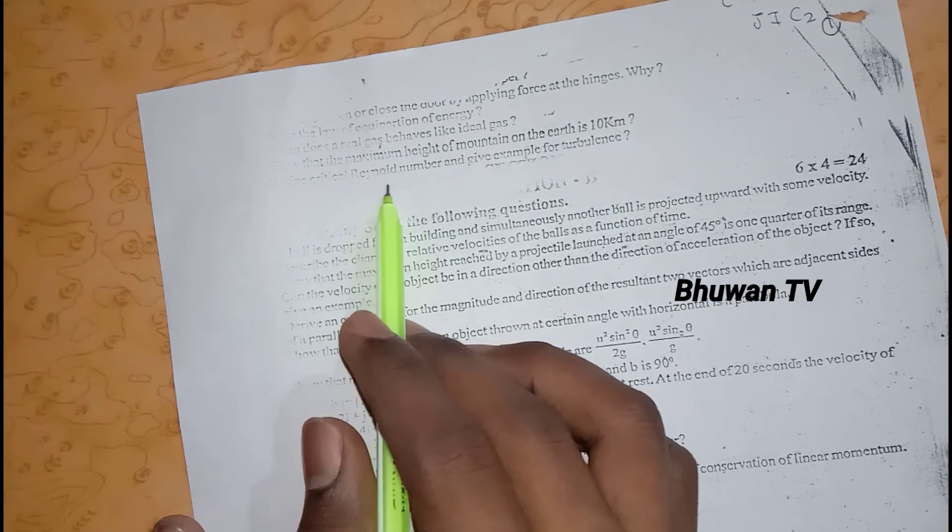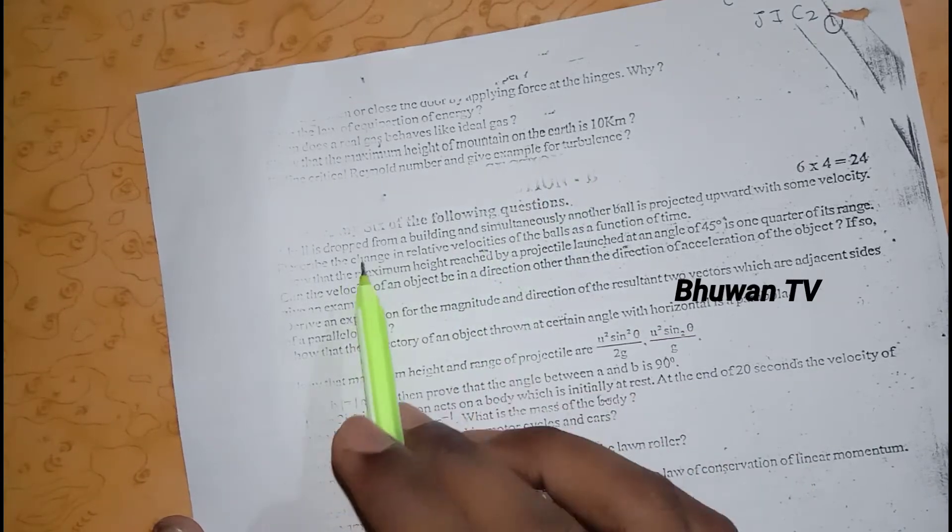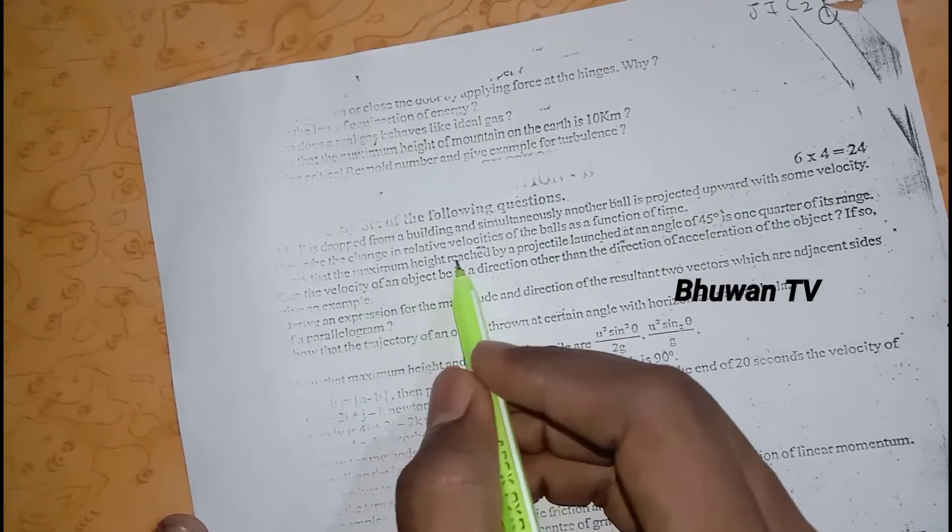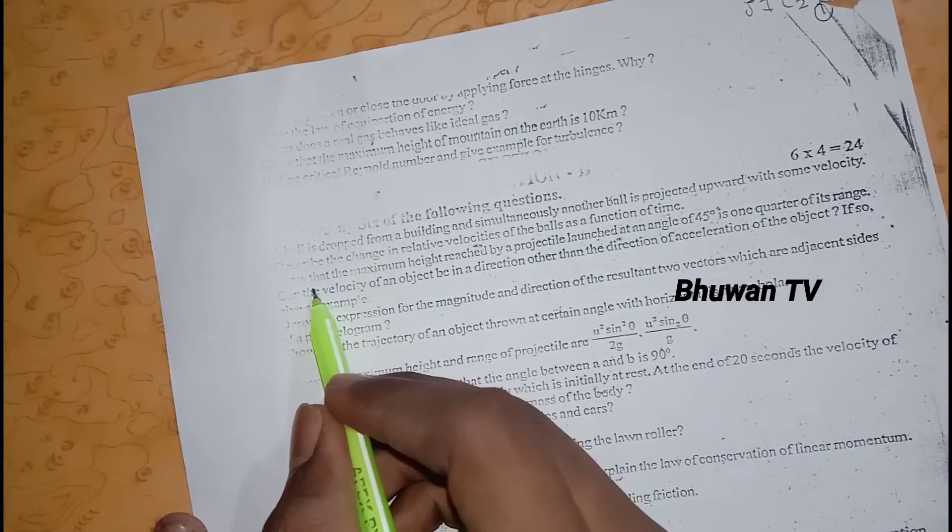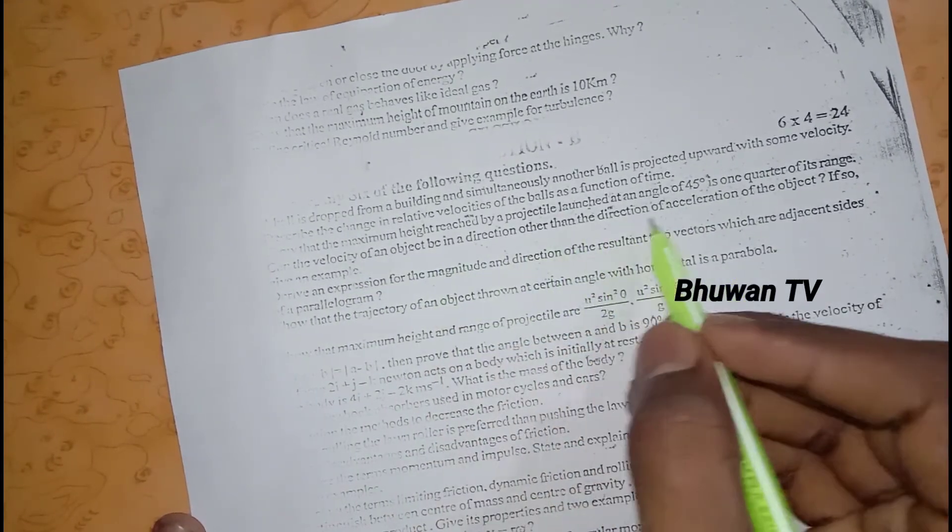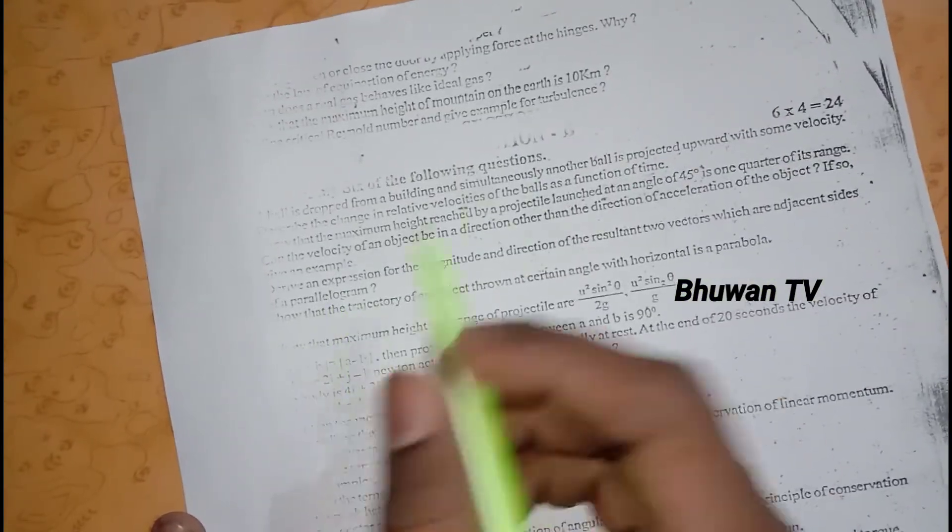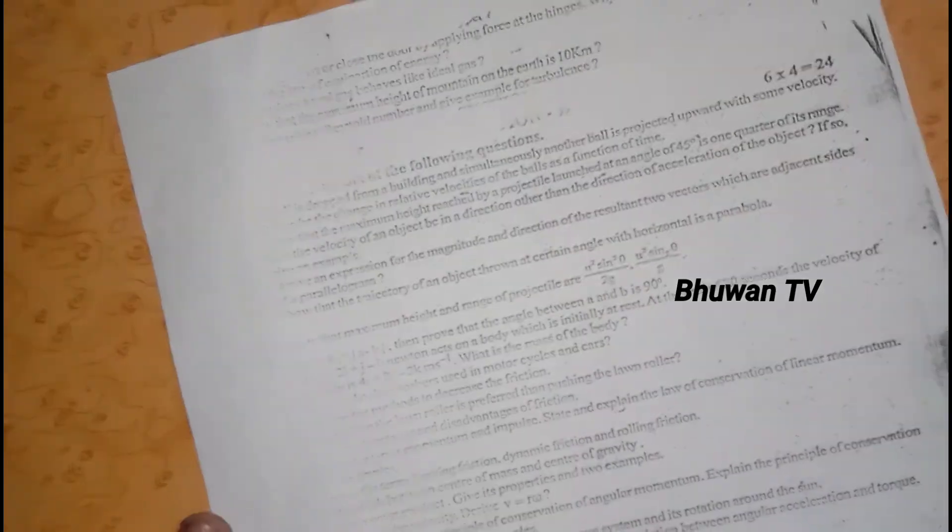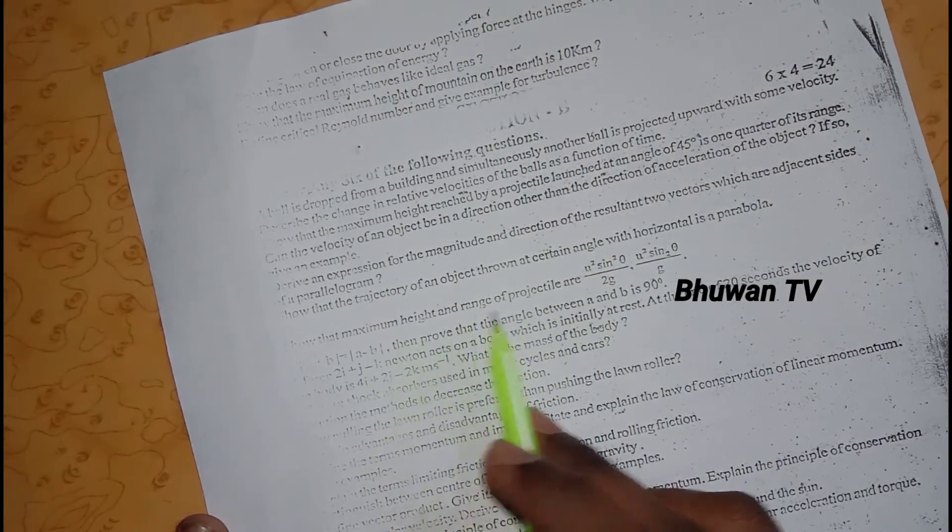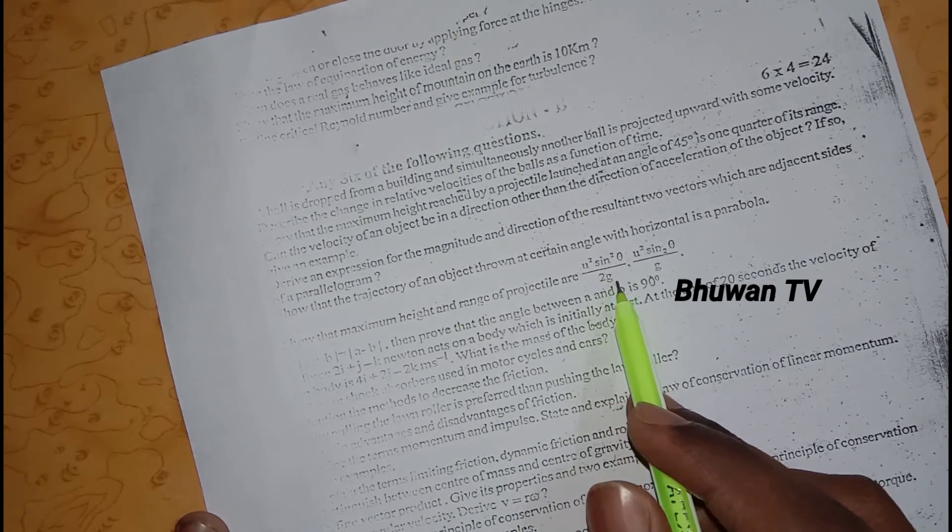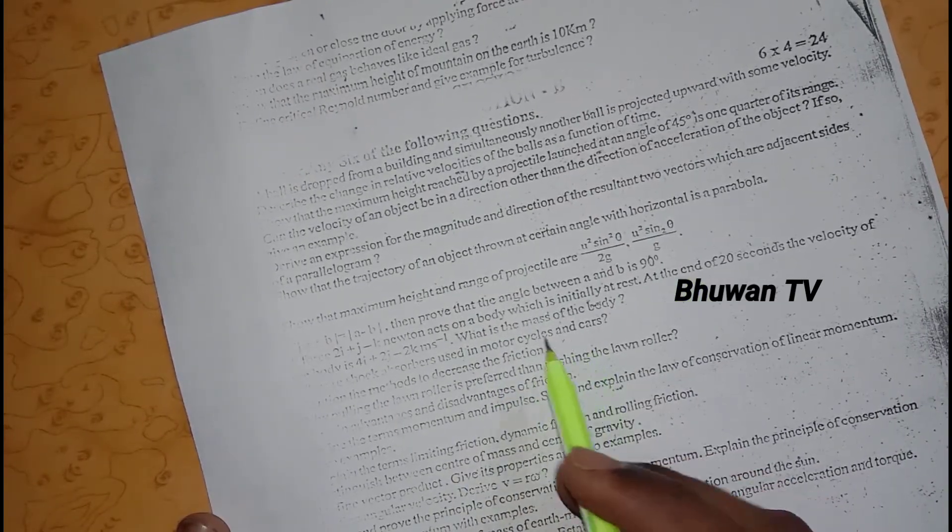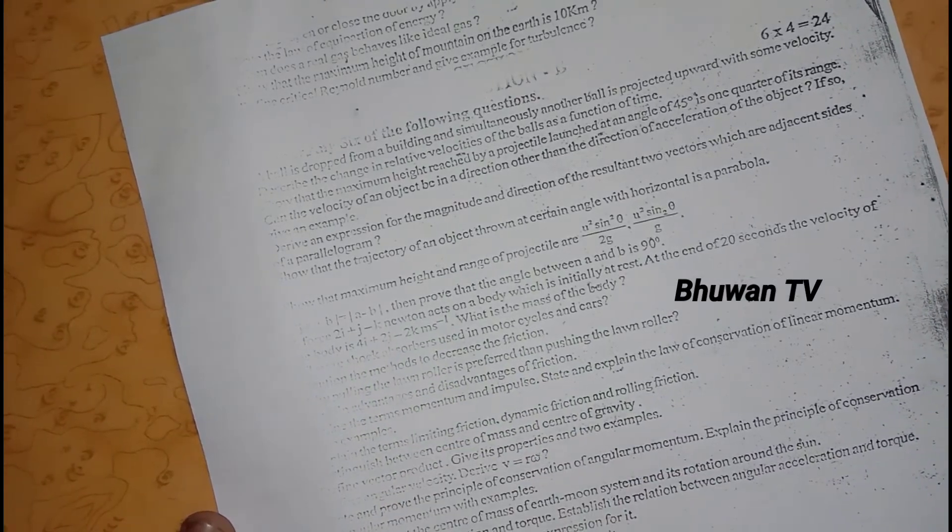Define critical Reynolds number and give example for turbulent. Next, a ball is dropped from a building, simultaneously another ball, so this is the problem. Show that the maximum height reached by projectile, the maximum height and range of projectile. The equation is h = u squared sin squared theta by 2g, and range is u squared sin 2 theta by g.